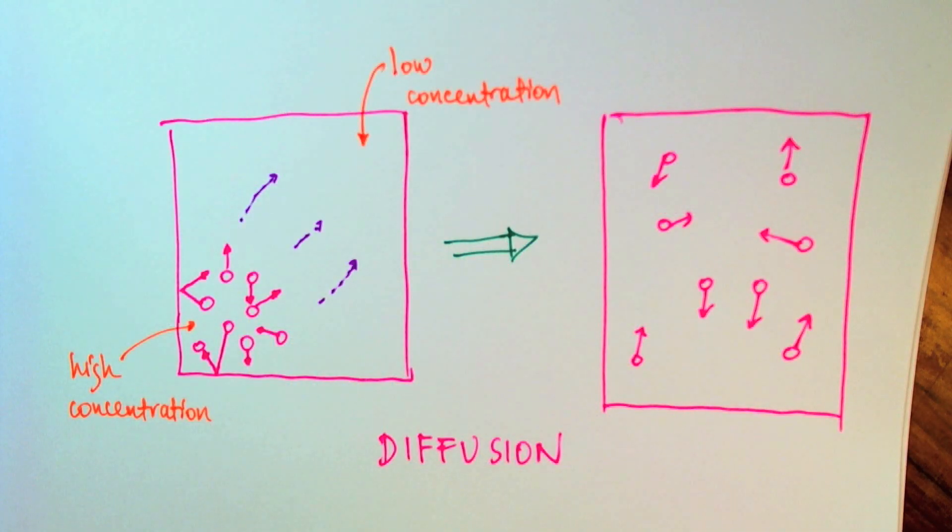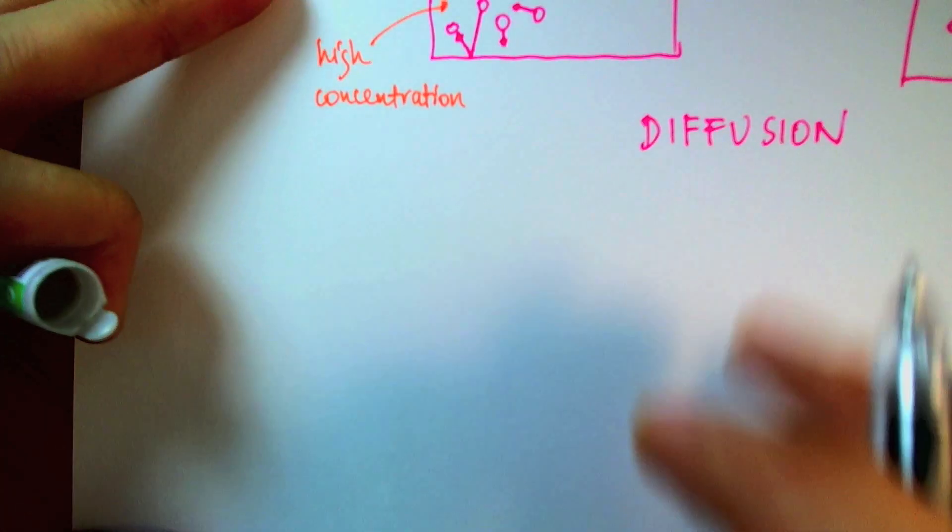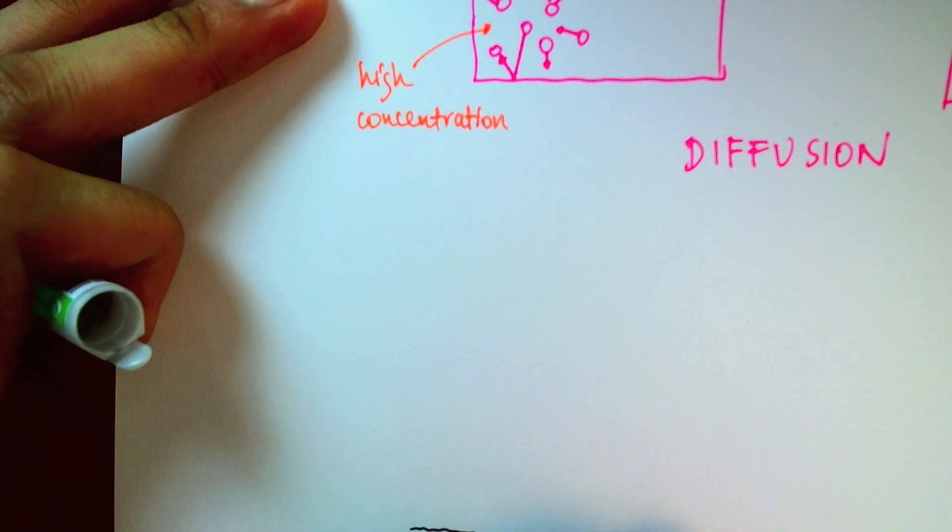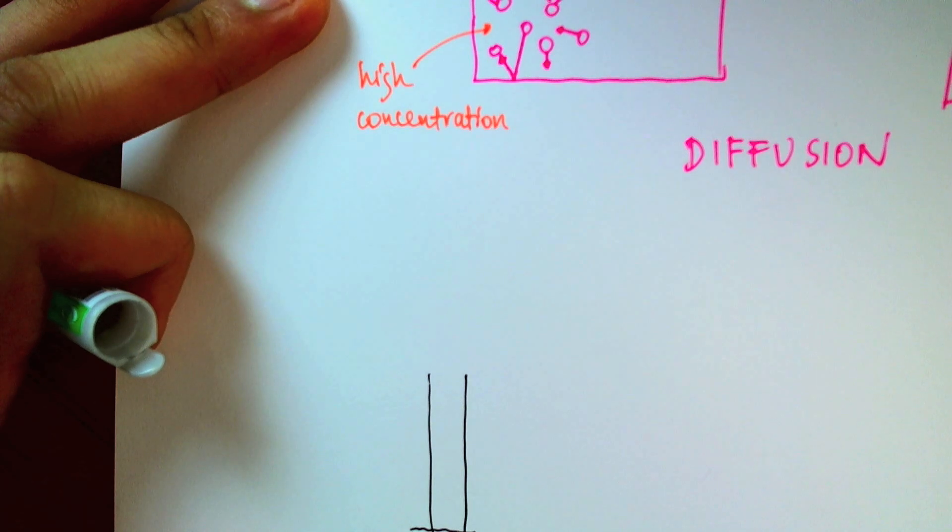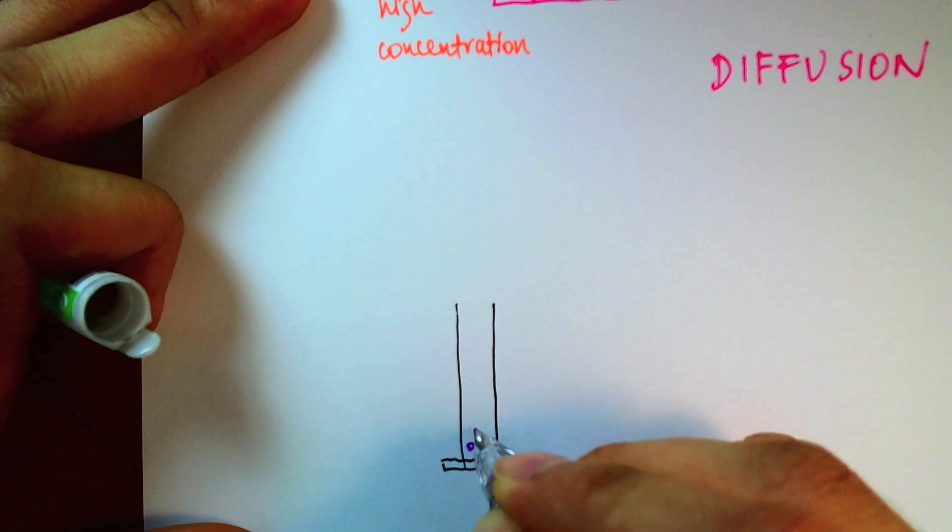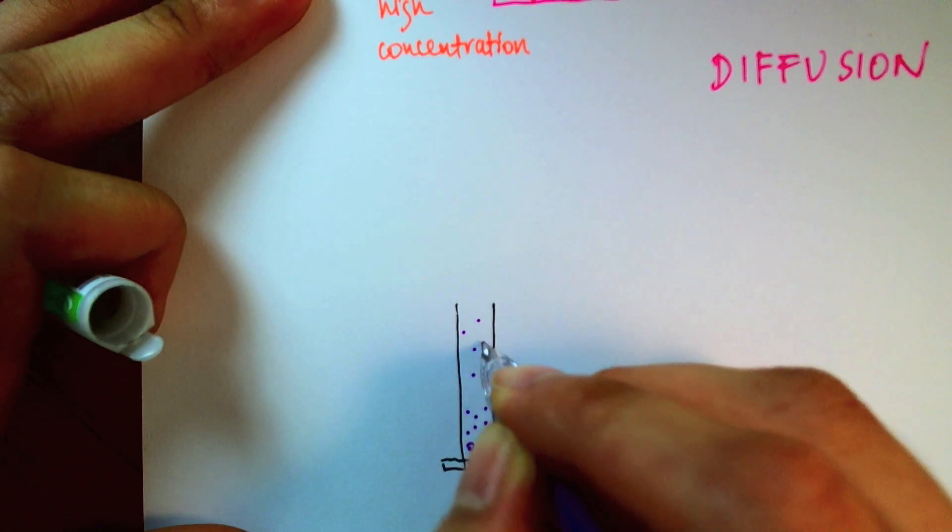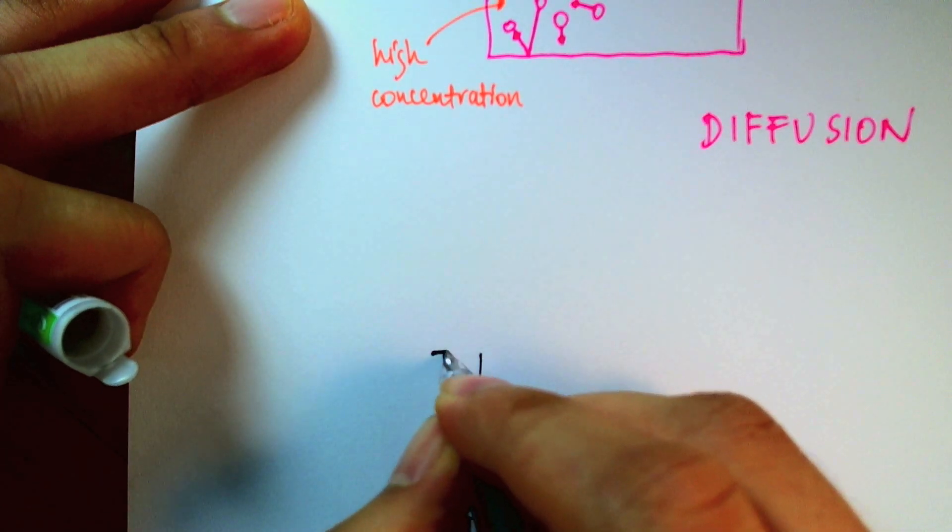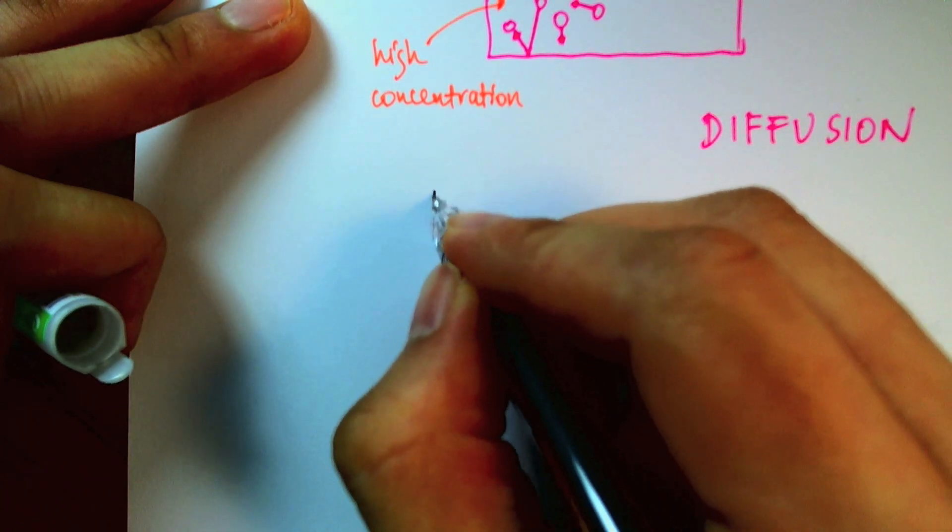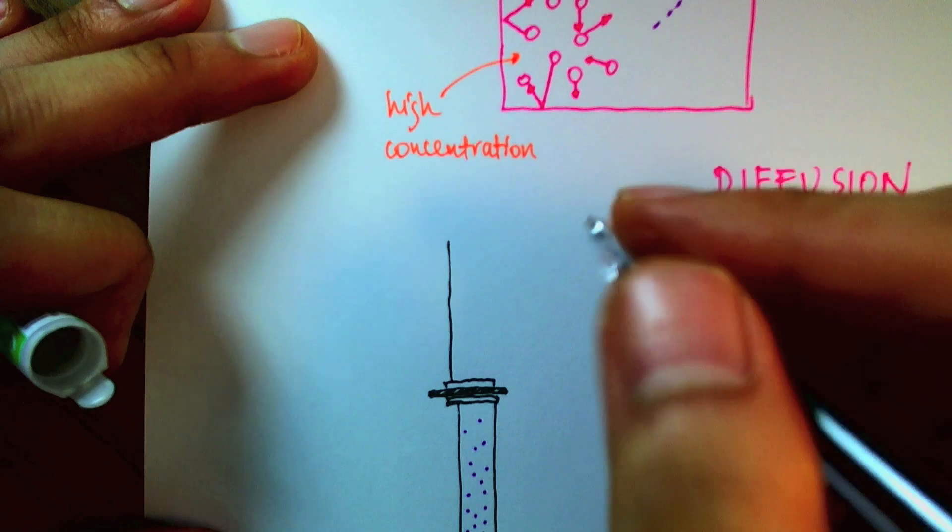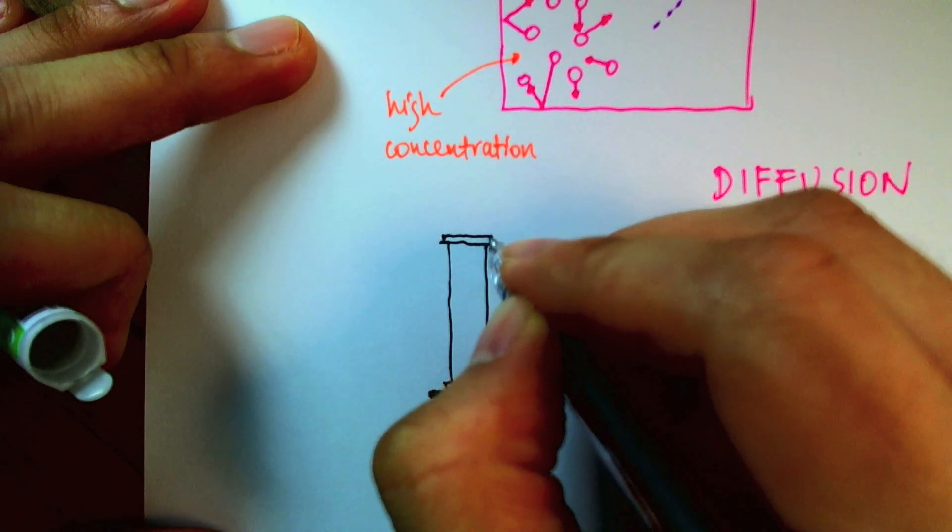The next thing that we might want to do is we might want to think up some experiments that we can perform in the lab to show evidence of this spreading of particles through random motion. One such example might go like this. I'll set up two cylinders, one cylinder here, and I'm going to fill the cylinder with bromine gas.